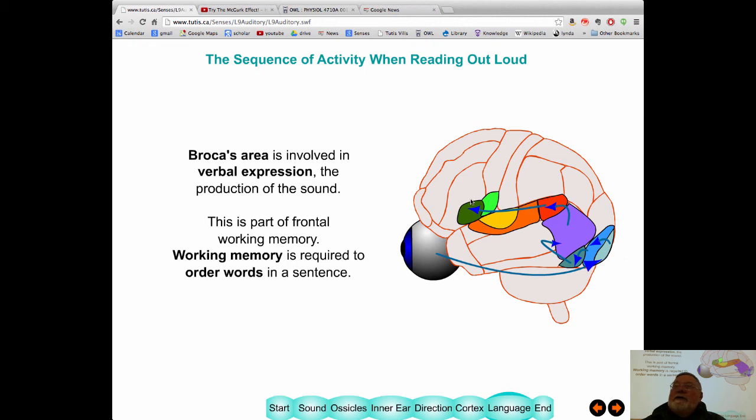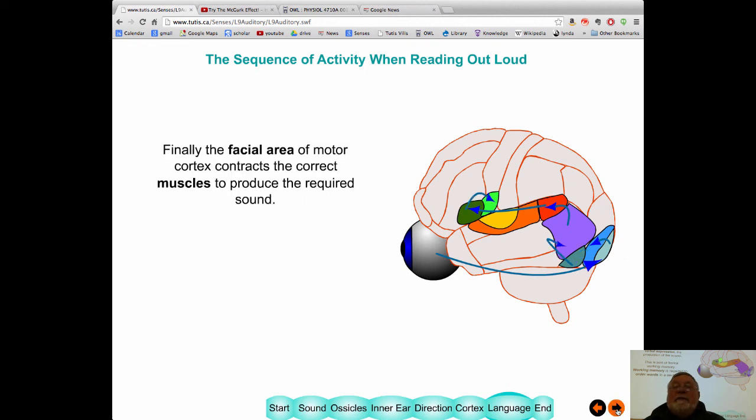It's also located here in the frontal lobe. So, it's involved in forming the grammar of the words. So, it's making sure the subject comes first, then the verb, then the object, and putting it together with the right grammar. So, the word order. And from there, information flows through the facial area. Imagine, your homunculus is over here. Over here is where the face is. Your tongue was. So, this area then moves the lips and moves the tongue and contracts your vocal cords and produces sound.